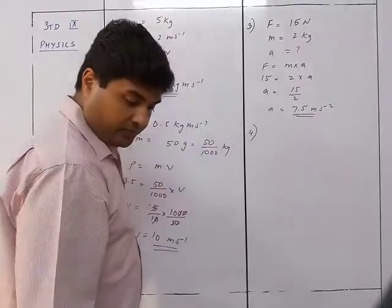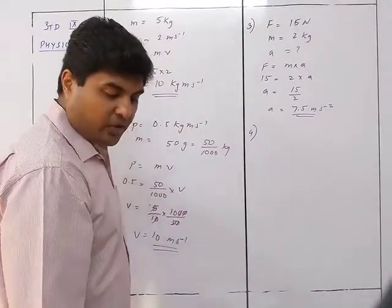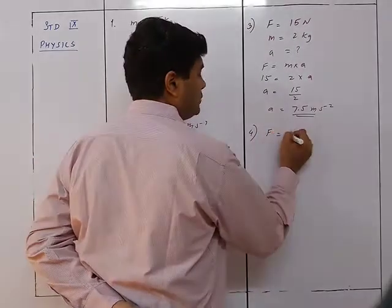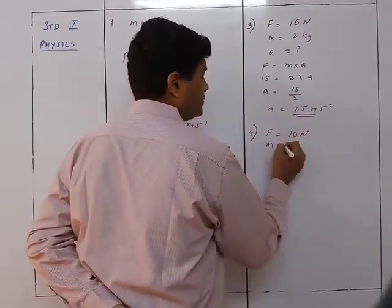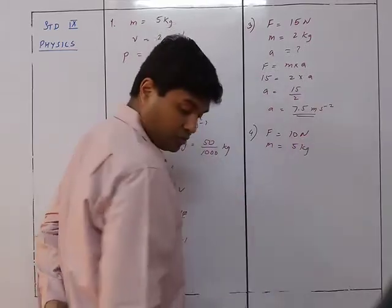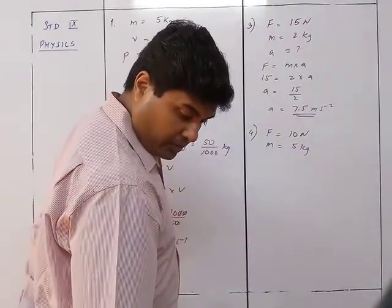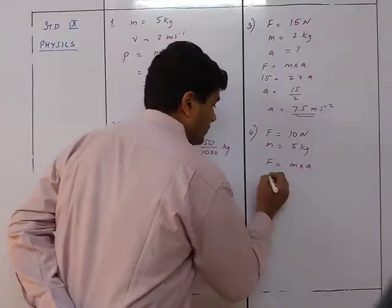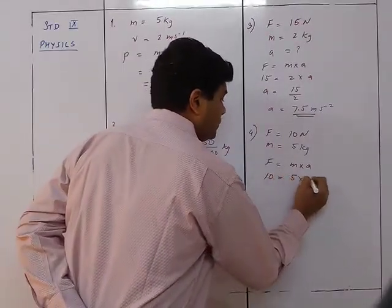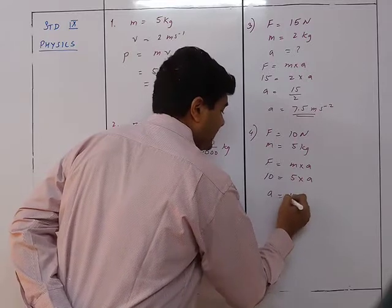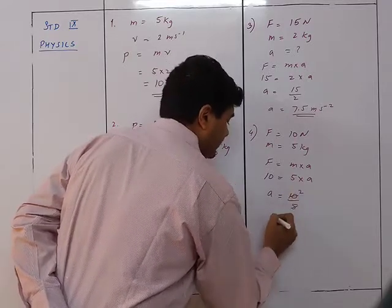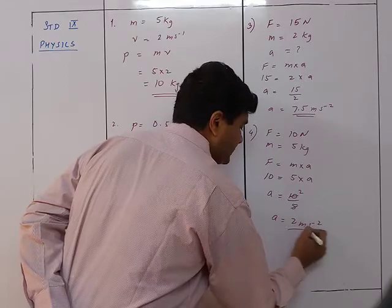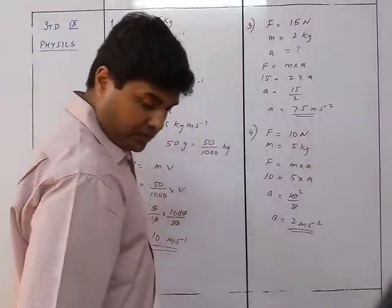Question 4: A force of 10 Newton acts on a body of mass 5 kg. Find the acceleration. Using F equals m times a: 10 equals 5 times a, so a equals 10 upon 5, giving a equals 2 meter per second squared. The initial sums are very easy — just apply the formula and get the answer.